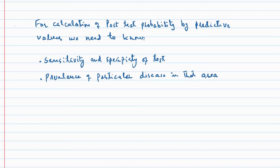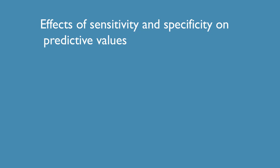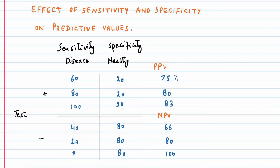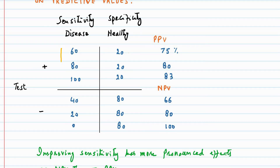Now let's see how the sensitivity and specificity of a test affects the predictive values. Another factor that affects the predictive values is sensitivity and specificity of the test. If the specificity of a test is held constant, an increase in sensitivity of the test leads to a corresponding increase in negative predictive value. And when the sensitivity of the test reaches 100%, the negative predictive value also becomes 100%, as we have observed in the example of blood glucose level. There is some increase in positive predictive value, but it's not to the same extent as negative predictive value.